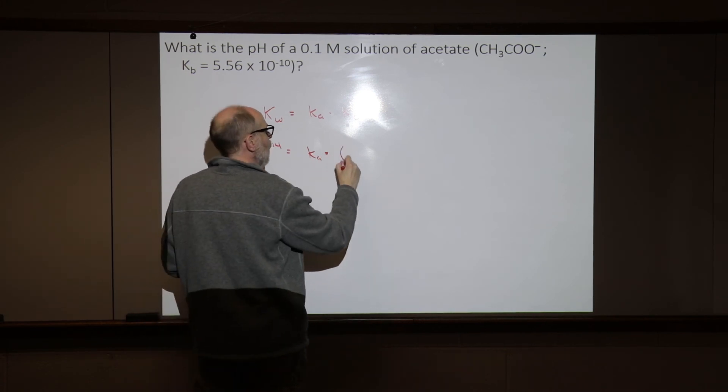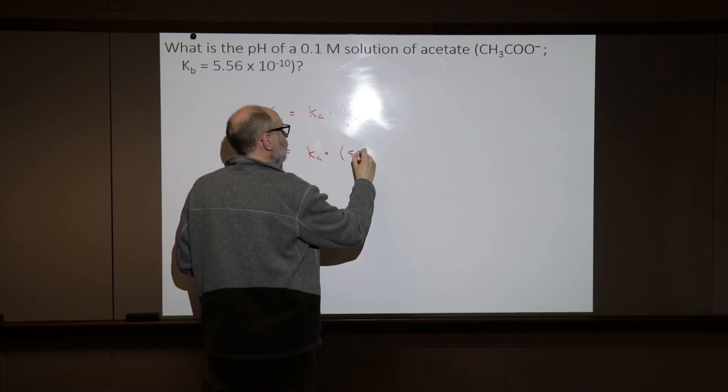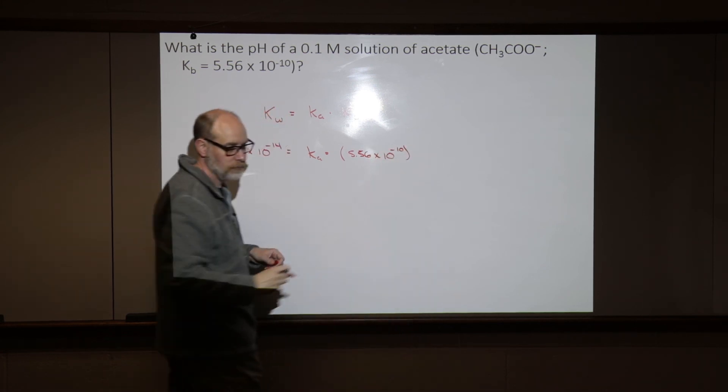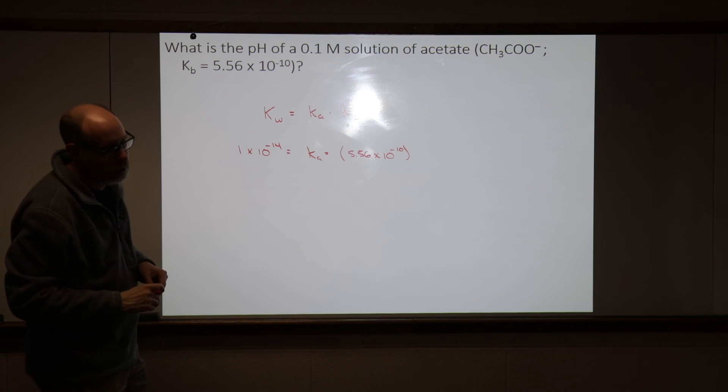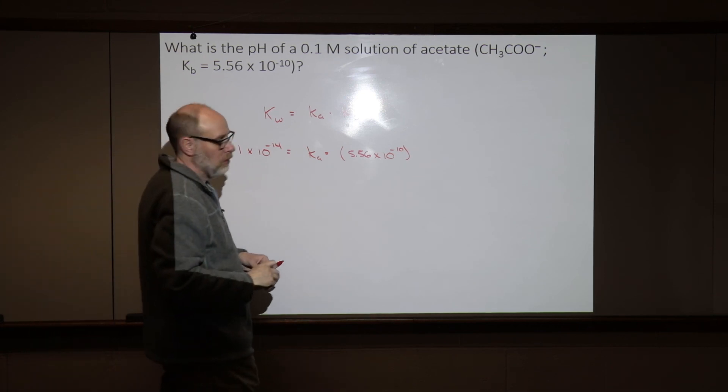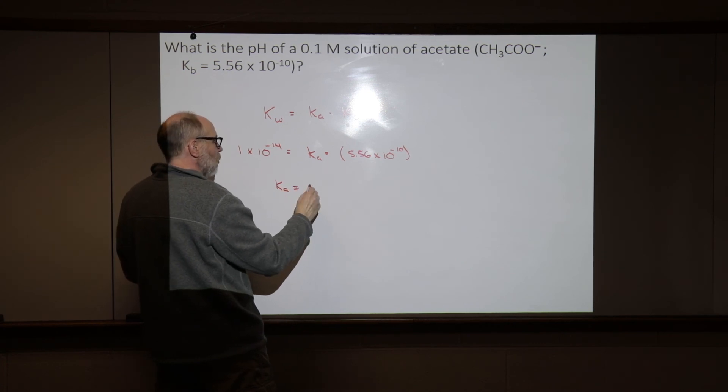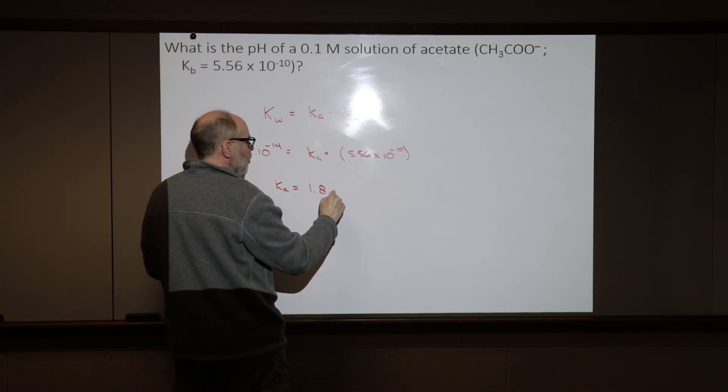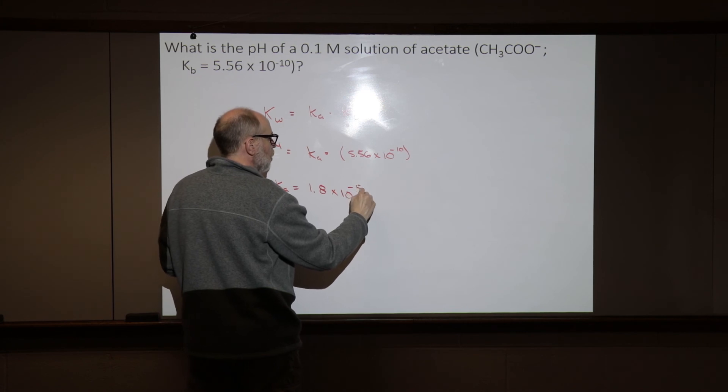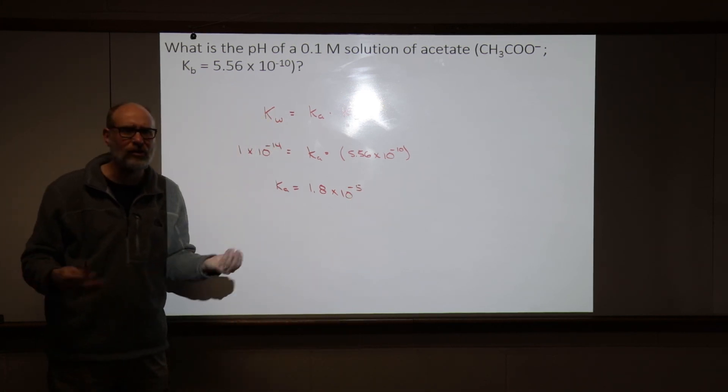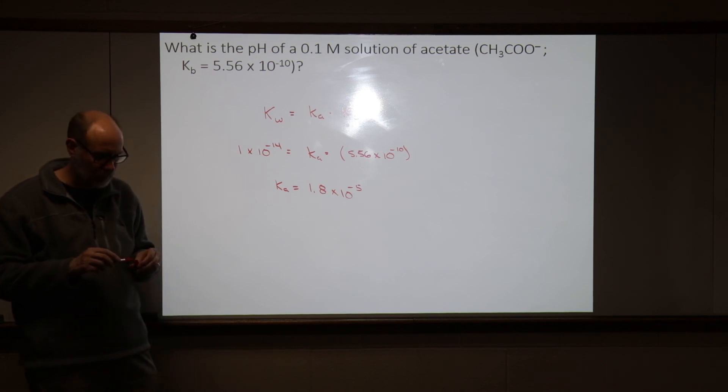it would be the Ka times 5.56 times 10 to the minus 10th, all right? And if you solve for Ka, the Ka should be right around 1.8 times 10 to the minus 5th. You may get somewhere around like 1.76 or 1.75 or something like that,